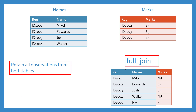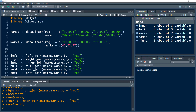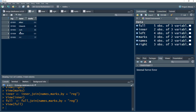Next is full join. As the name suggests, it retains all the observations from both tables. It takes the names table and combines whatever names and marks tables have in common — Edwards and Josh. Then we have 1005, which is present in marks but not in the names table, so it gets a missing value in the names column. And 1001 and 1004 are present in the names table but not in marks, so they get missing values in marks. Full join combines all observations. We use the full_join function and the parameters remain the same.